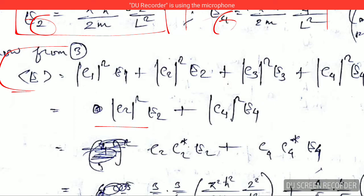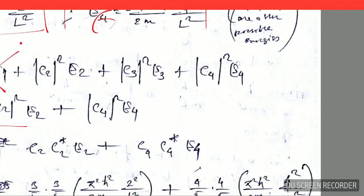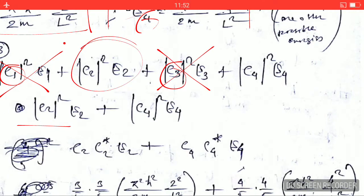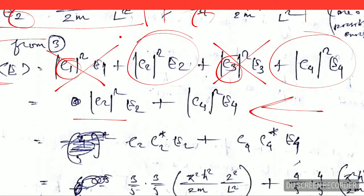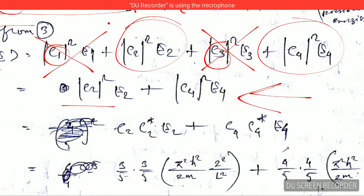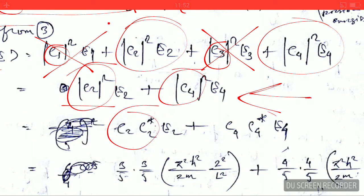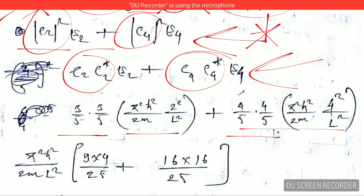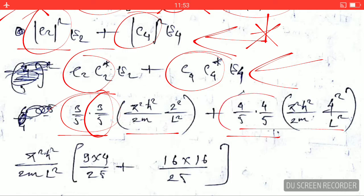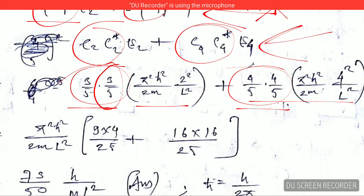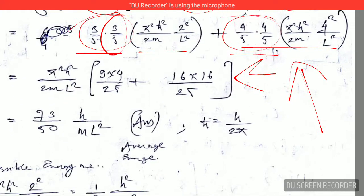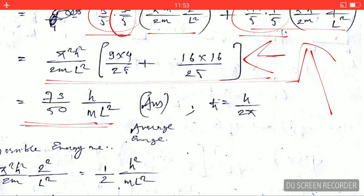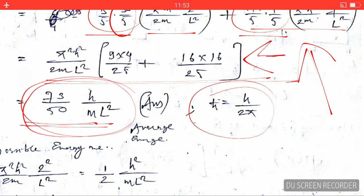To clarify: since C₁=0 that term vanishes, and since C₃=0 that term also vanishes. Only the C₂ and C₄ terms survive. The complex conjugate of a real quantity does not change it — for example, the complex conjugate of 4 is just 4. Plugging in all values and simplifying, using ℏ = h/(2π), we arrive at the final expression for the average energy ⟨E⟩.